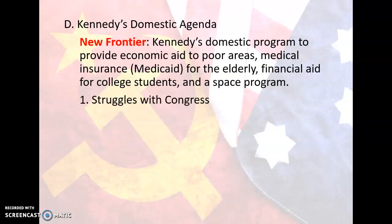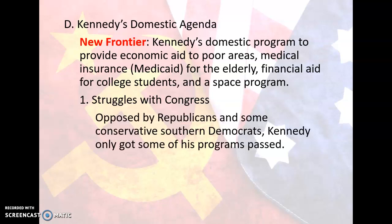Number one: struggles with Congress. Kennedy was opposed by Republicans and some conservative Southern Democrats. In fact, Kennedy only got some of his programs passed. He raised the minimum wage to $1.25, passed the Trade Expansion Act, and expanded the Social Security system. Congress rejected Medicare, aid for college education, and a bill to create a Department of Urban Affairs — though all of those things would eventually be created at a later time.